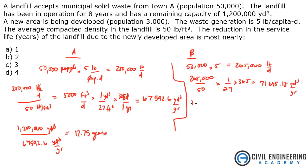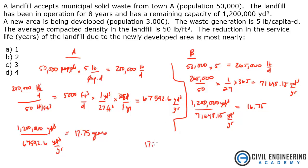Taking the capacity of 1.2 million cubic yards and dividing by 71,648.15 cubic yards per year gives us 16.75 years. Now all you do is take the difference: 17.75 minus 16.75 equals 1 year. With the added population, we've reduced the service life by 1 year. The answer is A.